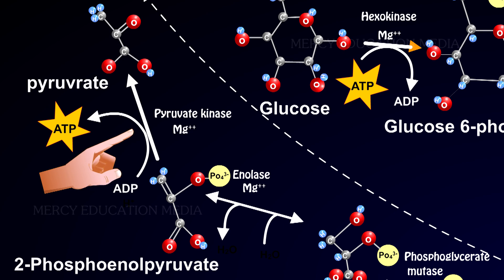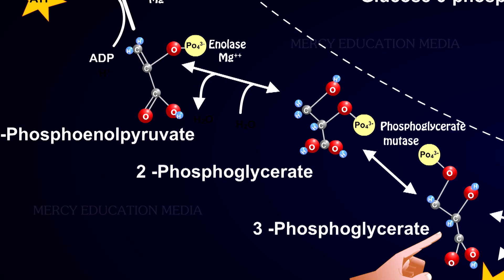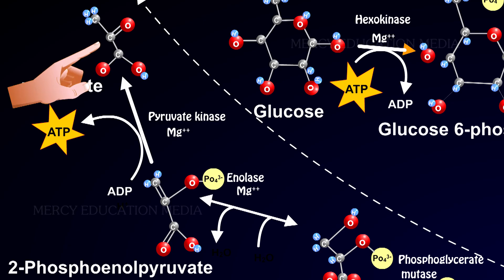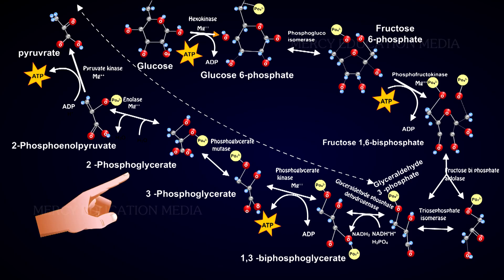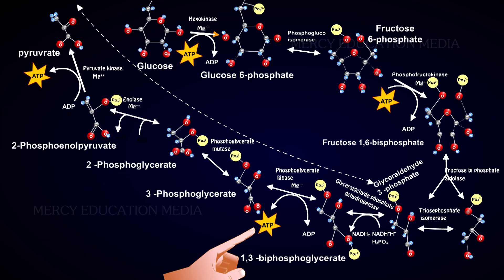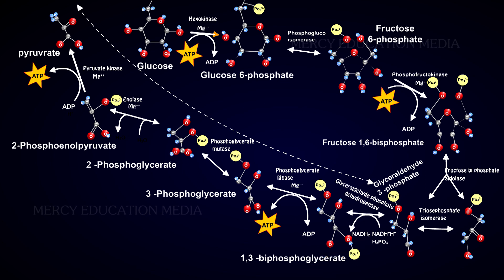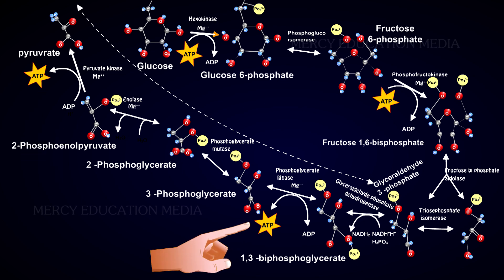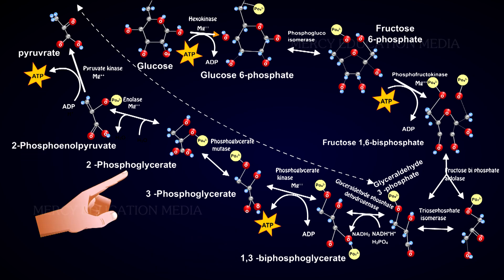In the triose phase, 2 molecules of 3-phosphoglyceraldehyde produce 2 molecules of pyruvic acid. In glycolysis overall, 4 ATP and 2 NADH₂ molecules are formed, while 2 ATP molecules are consumed in the hexose phase. Hence, the net gain is 2 ATP and 2 NADH₂.